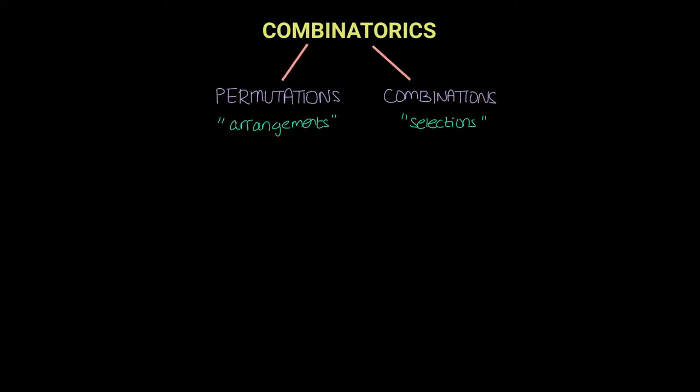Combinatorics is a study of permutations and combinations. Permutations is the arrangement of objects and combinations is a selection of objects.